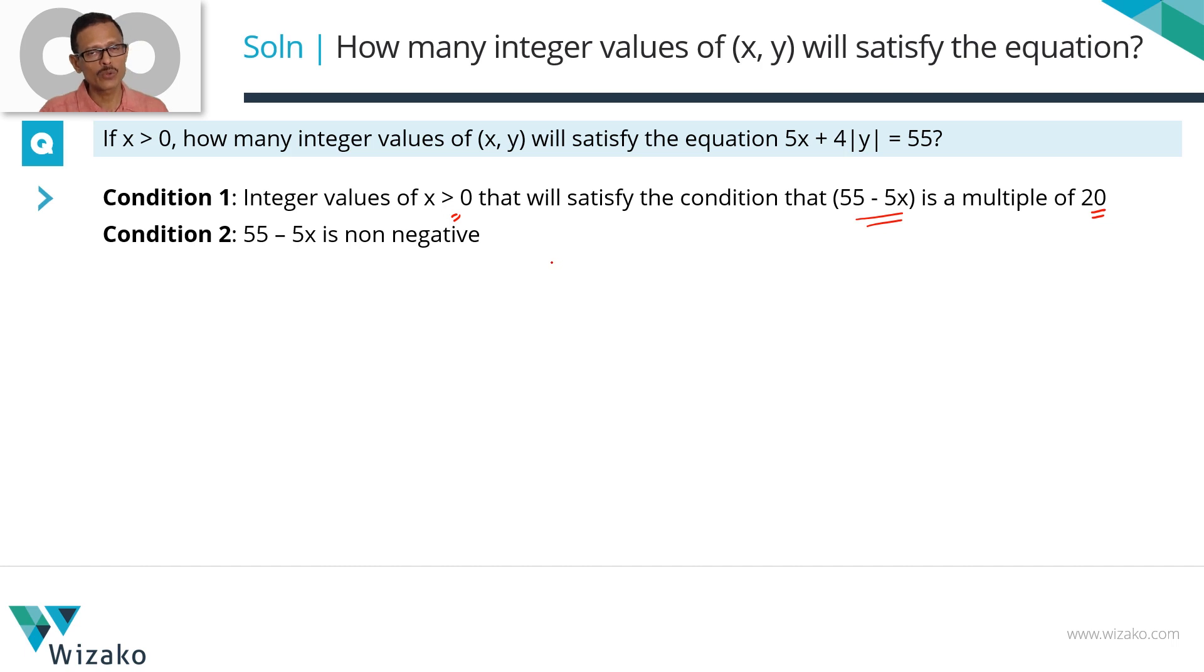One other important condition: because 4|y| = 55 - 5x and |y| cannot be negative, 55 - 5x is non-negative. Let's list down such non-negative values of 55 - 5x which are multiples of 20. Note one thing, if x is a positive integer, 5x is going to be positive, 55 - a positive number will have values which are less than 55. So we are looking for 55 - 5x such values which are less than 55, which are multiples of 20 and which will keep x as a positive integer.